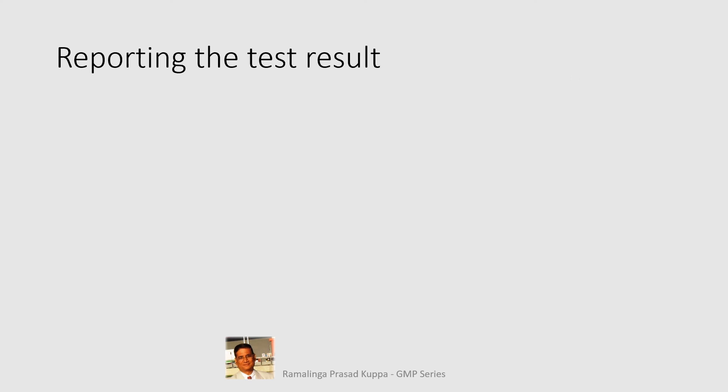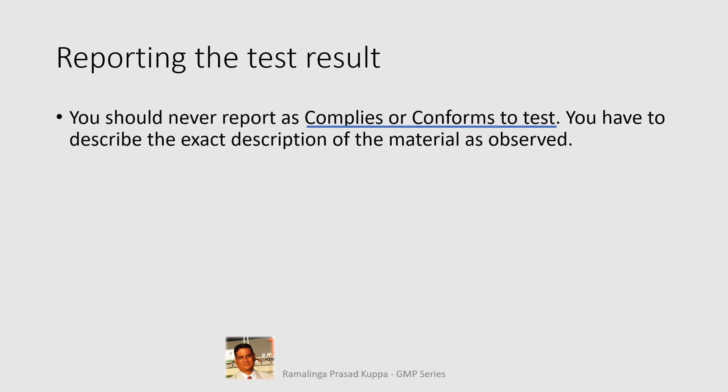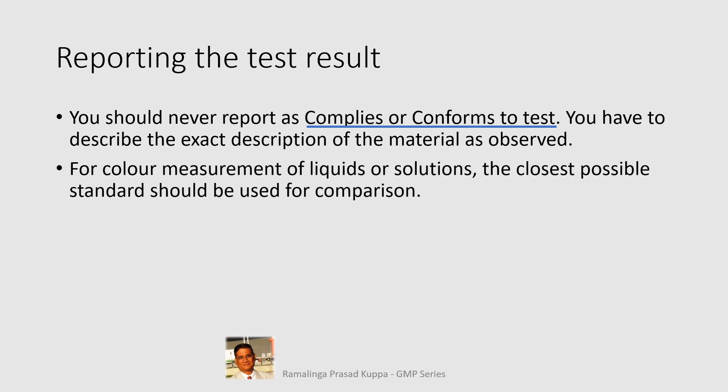Let us see how results are reported. You should never report as 'complies' or 'conforms to test' — you must describe the exact appearance of the material as observed. For example, if the specification says the powder should be white to off-white, you must describe whether it is white or off-white, and cannot report as 'complies' or 'passes test.' When the specification says white to off-white, the expectation is that the product should be closer to white. For liquid color measurements, the closest possible standard should be used for accurate comparison.